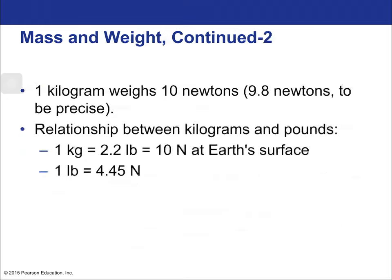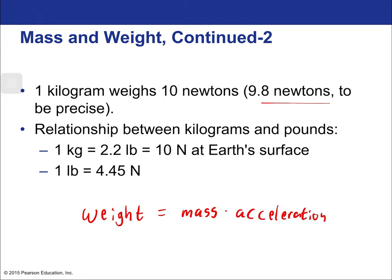One kilogram weighs approximately 9.8 newtons — we often round to 10 — on Earth, because weight equals mass times acceleration: W = mg. That's a hint at Newton's second law. For conversions: one kilogram is about 2.2 pounds, which is about 10 newtons. One pound equals 4.5 newtons, since both are forces.